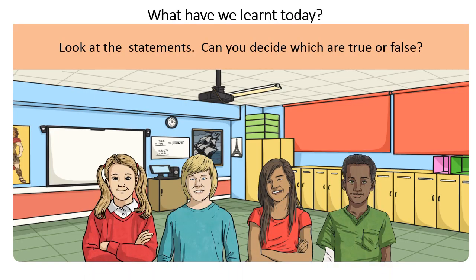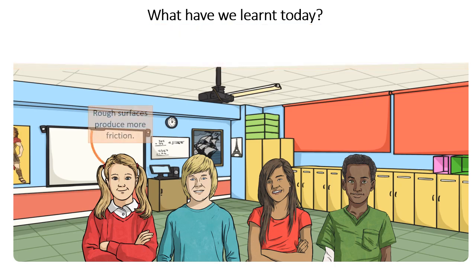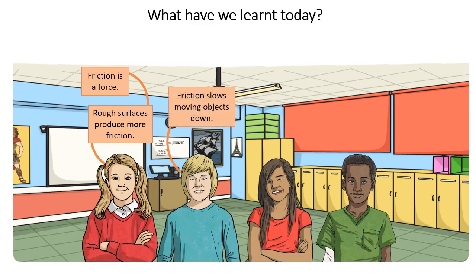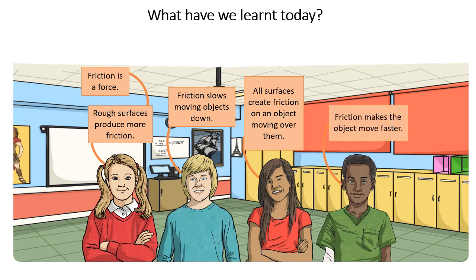Now here are some statements from students. We're going to say whether they are false or true. Rough surfaces produce more friction — true. Friction is a force — true. Friction slows moving objects down — yes, true. All surfaces create friction on an object moving over them — true. Friction makes the object move faster — no, that's false. And friction is always a useful force — no, that's also false. It's not always a useful force; in some situations it is useful, and we will come to know more about that later.